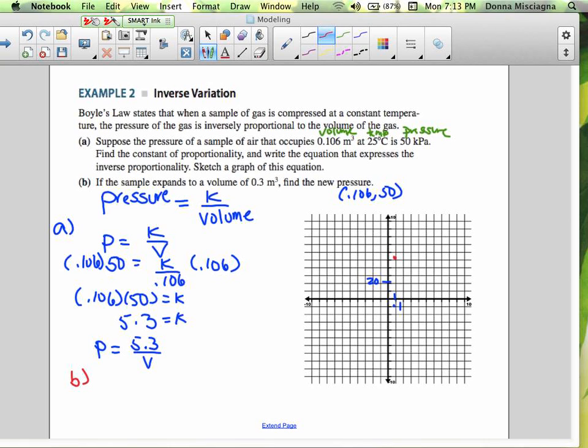Alright. So, B says if the sample expands to a volume of 0.3 meters cubed, find the new pressure. Alright. So, P is equal to 5.3 and the volume now is 0.3. Okay. Just plug that into the calculator. So, P is about 17.7.